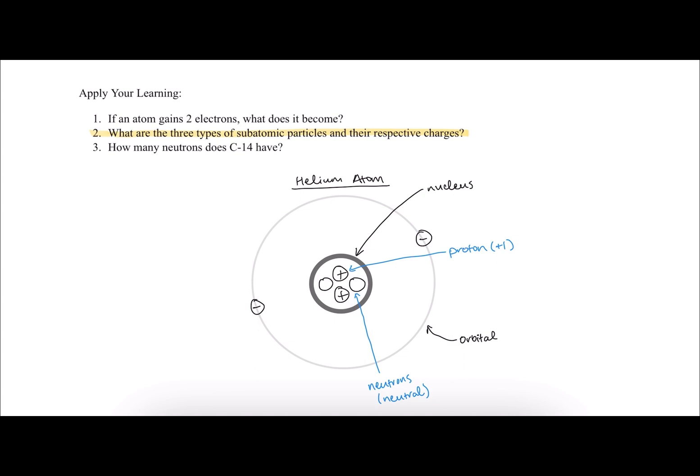And then inside of the orbitals, or orbiting around the orbitals, we have electrons, which carry a negative one charge.